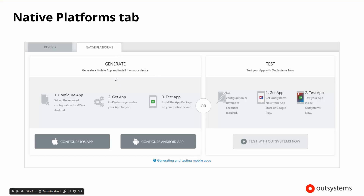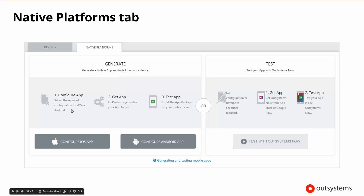Here we have two options: we can either generate the mobile app so that we get the application package and can install it on our device, or we can immediately test the app with OutSystems Now — though we'd need to have OutSystems Now on our phone first. We're focusing on generating the app and getting the application package. So, we configure the app by setting up all of our configurations for signing and certificates, then ask it to generate the code to get the application package. Because signing is different between iOS and Android, there are two different buttons to allow us to do that.